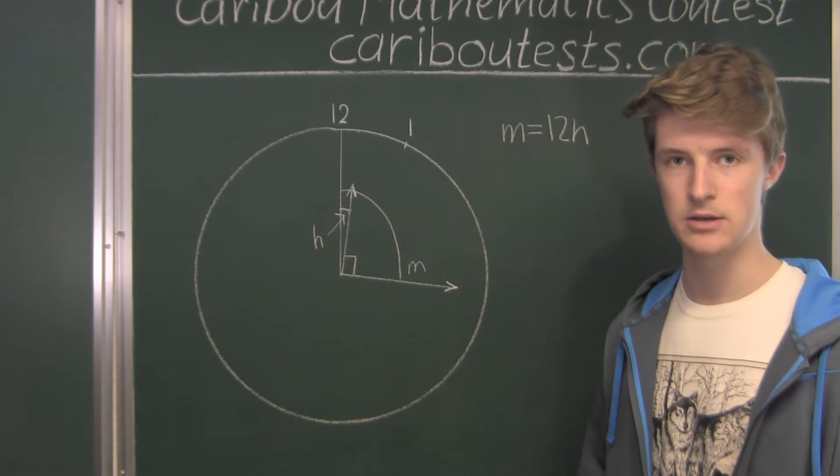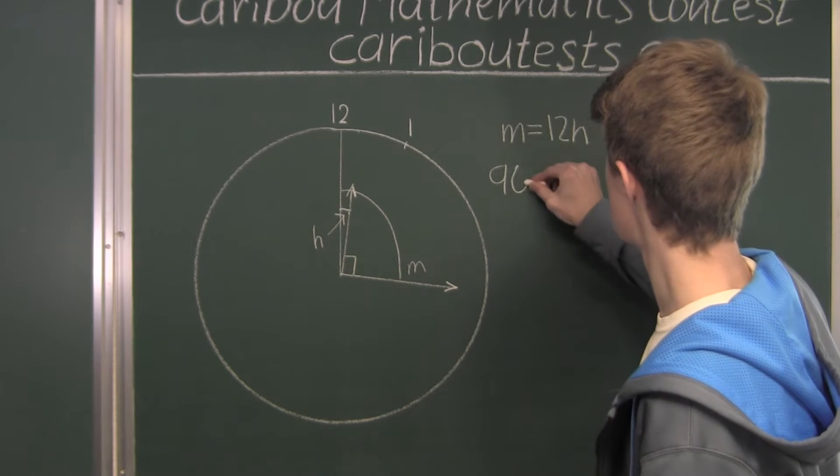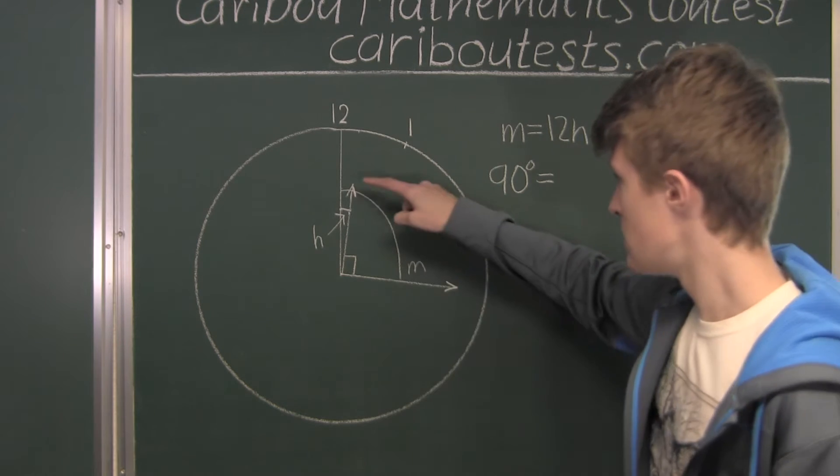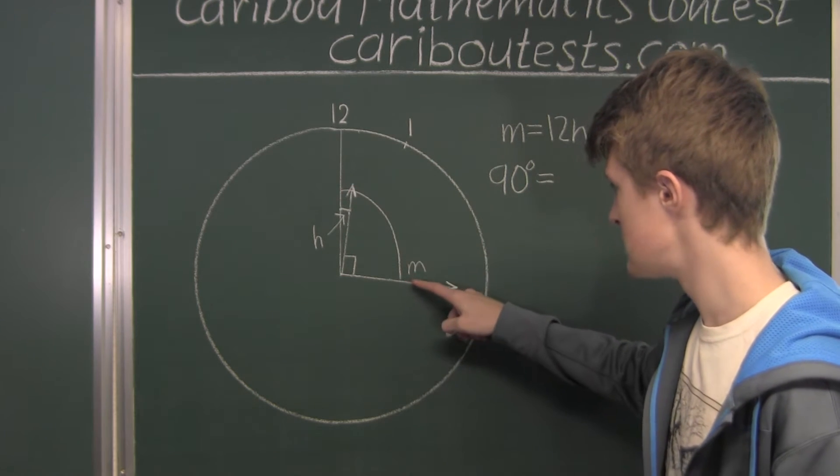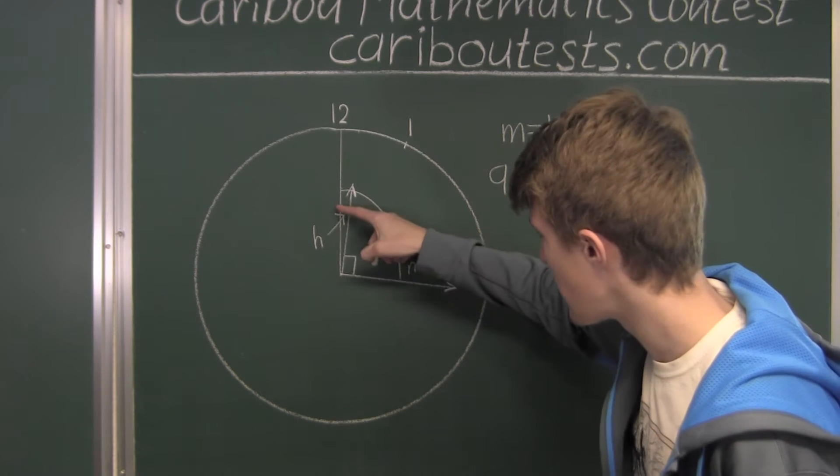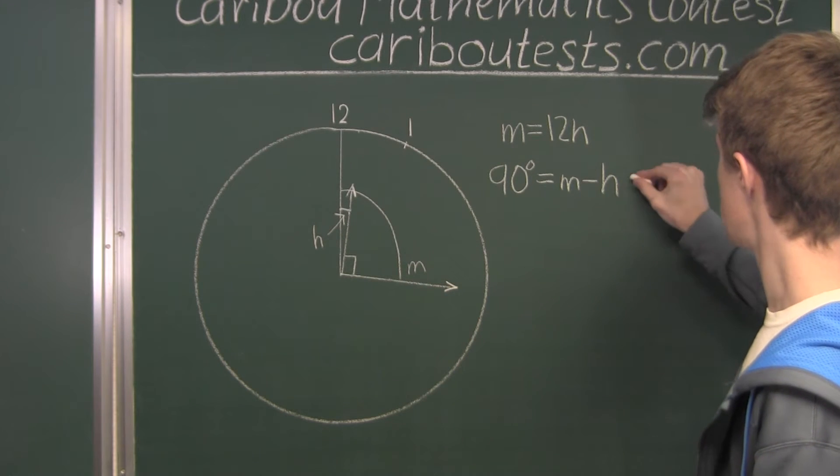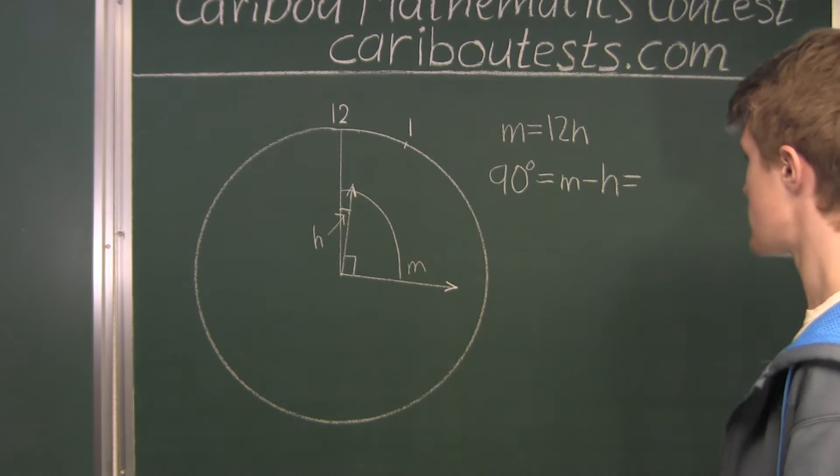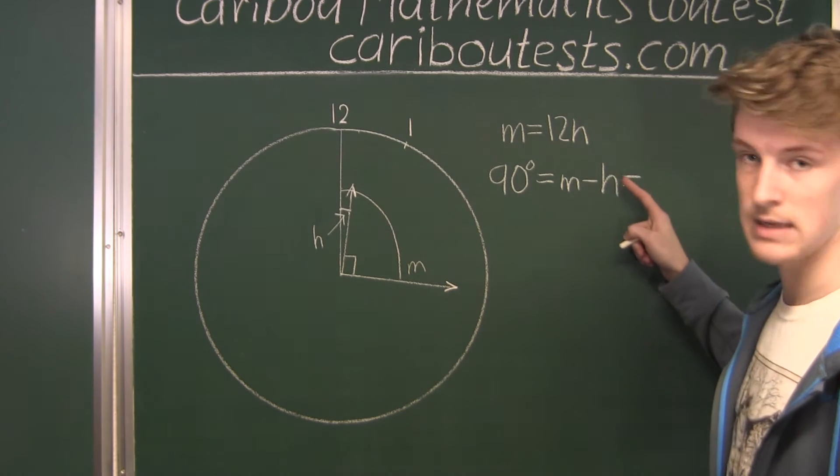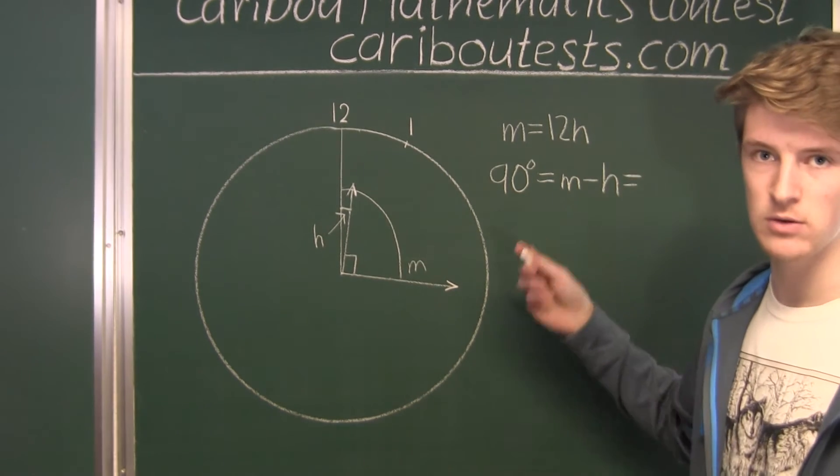And we know that a right angle is ninety degrees, so we have 90° equals the angle that the minute hand has to move, which is M, minus the angle that the hour hand has to move, which is H. This equals, well, we have M = 12H, so if we have M - H, that is equal to 12H - H, which equals 11H.